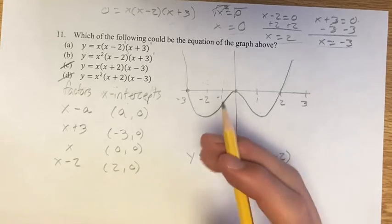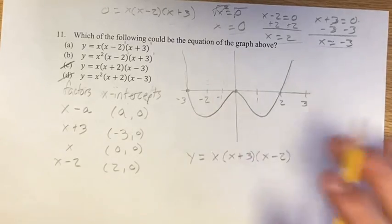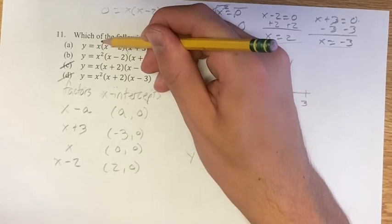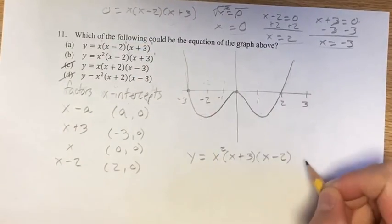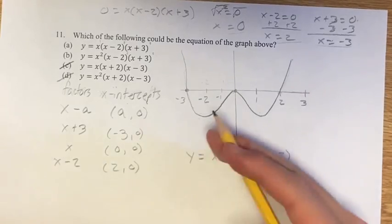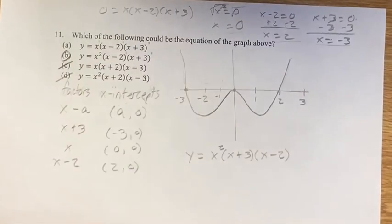So if it's bouncing off, that means it has to be to an even power. So therefore, it could be x squared, x to the fourth, x to the sixth. Our only options here are x to the first power and x to the second power. So therefore, we know it has to be x to the second power because that's the only even option. So therefore, we know b must be our final answer.